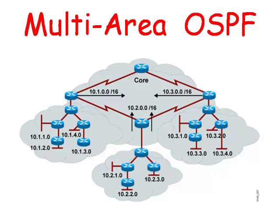Also, the smaller the database, the less CPU time is needed to recalculate the shortest path between the network when the topology changes.